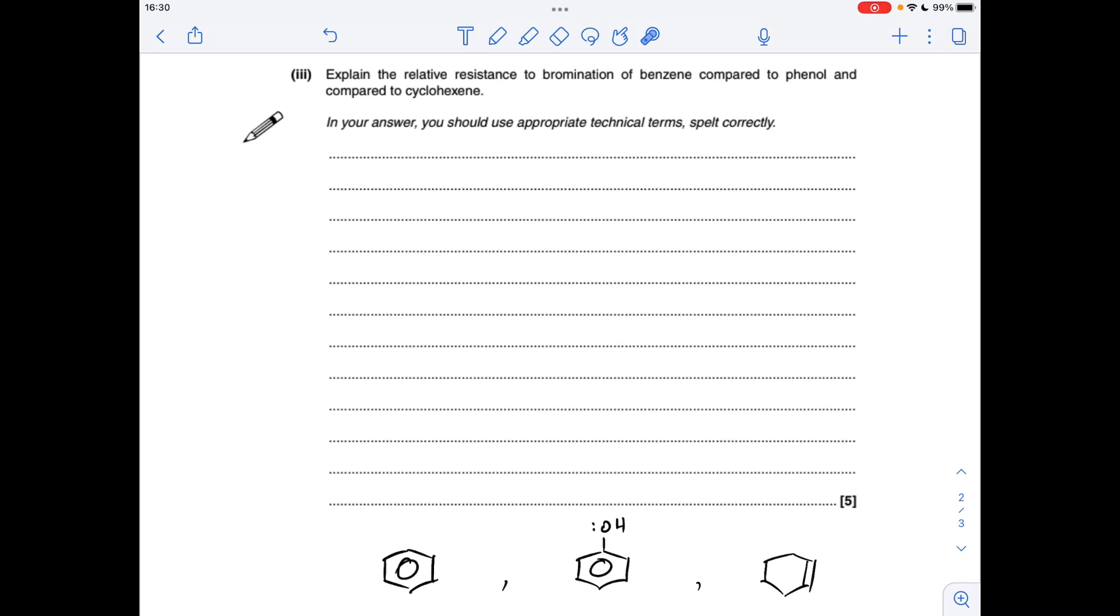So we'll start with benzene. We've got delocalised pi-electrons in benzene, so that gives the pi-electrons a low electron density, and that means it's unable to polarise the bromine molecule, and therefore that is going to prevent it from reacting, because they don't attract each other.